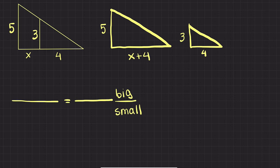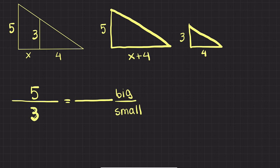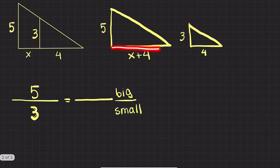In the big triangle I have the side five, so I write it on top. This side is proportional to the side three of the small triangle, so I write three on the bottom. The base of the big triangle is X plus four, so I write it on top, proportional to the base of the small triangle, which is four on the bottom.